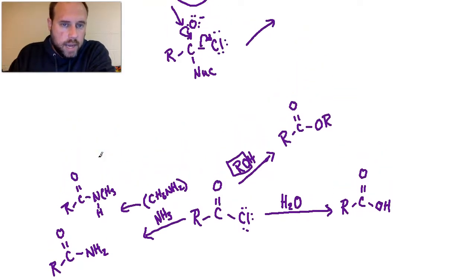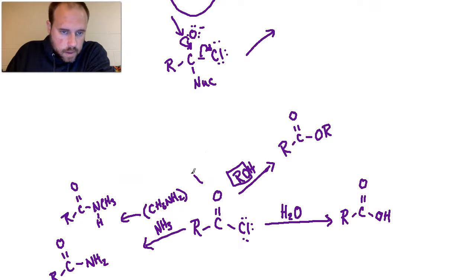Now if it were to be this case right here, I would end up with R-C double bond O, and then I would have NH, and then I would have the CH3. So different types of amides that we can make. You can also make an anhydride out of this. So if we were to use the carboxylate type of ion, we can couple that with the acyl chloride in order to make an anhydride.